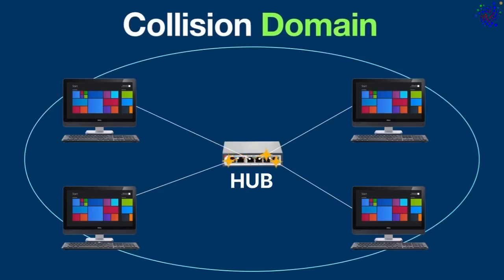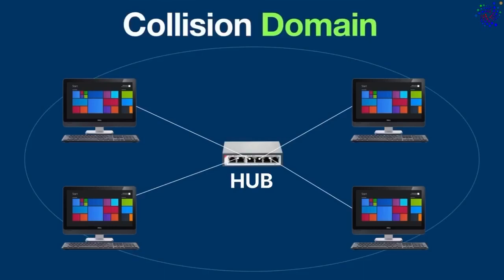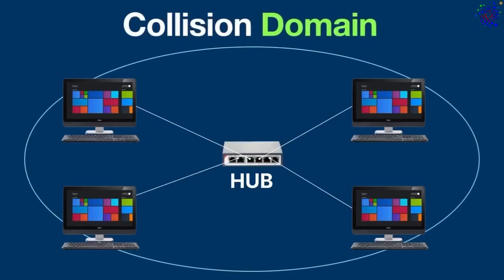This means every other device connected to this hub will receive the data whether it was meant for them or not. This is why hubs are considered dumb devices — they don't think. You can imagine that when you connect more devices to a hub, it creates one big collision domain, and as a result more collisions can happen. This is the main reason collisions occur in a hub.